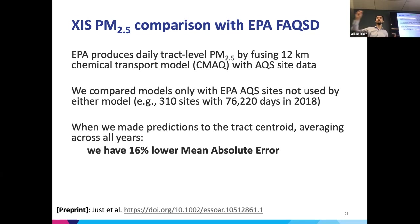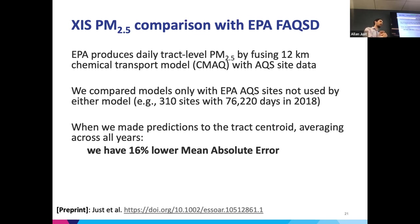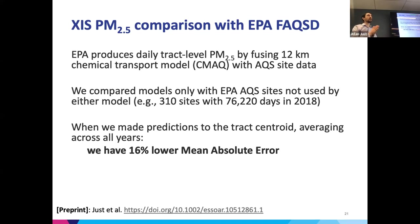When we make predictions from our model — because it can make point-based predictions — we make predictions wherever we want. When we make predictions at the same census tract centroids that the EPA is releasing, we have lower mean absolute error. We use mean absolute error instead of mean squared error here because air pollution concentrations have a very long tail — they're never negative but sometimes very, very high. We think absolute error is a more appropriate metric.